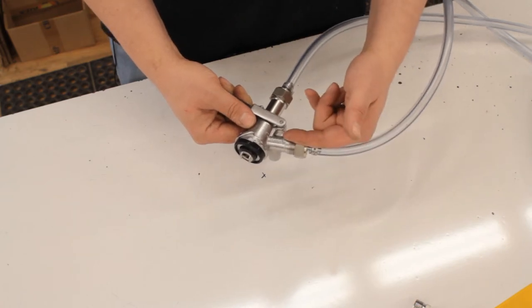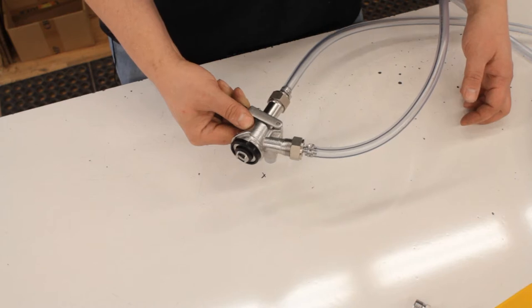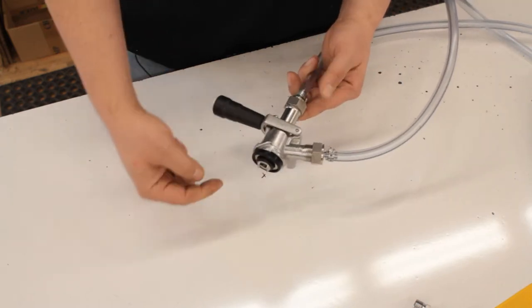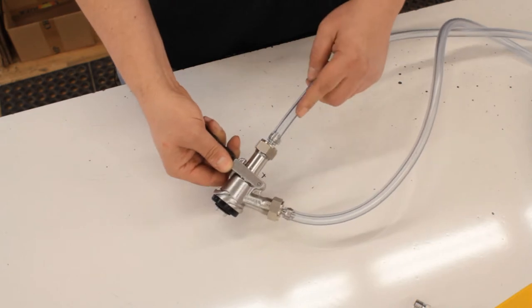This is where the gas goes in, whether it be CO2 or nitrogen or some blend of the two, and that forces the beverage out of the keg up through the center section here to the dispensing line.